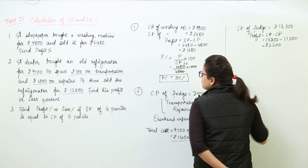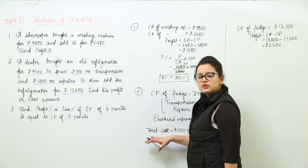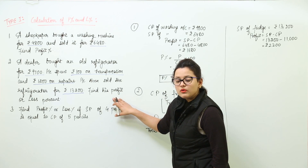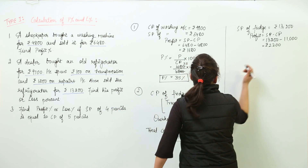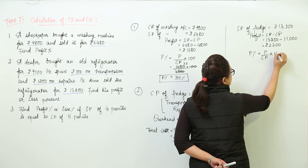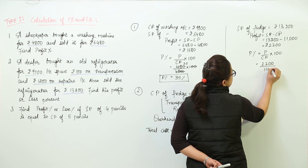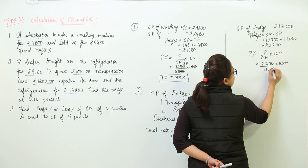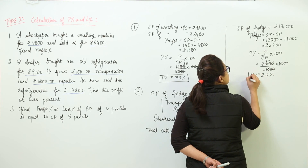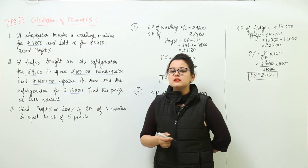We still need to find the profit percent. Profit percent equals (profit / CP) × 100, that is 2200 divided by 11000, multiplied by 100, which gives us 20%. So the profit percent earned by the dealer in this transaction is 20%.